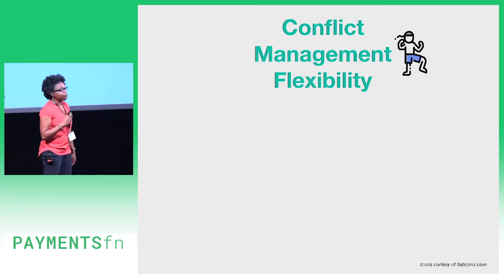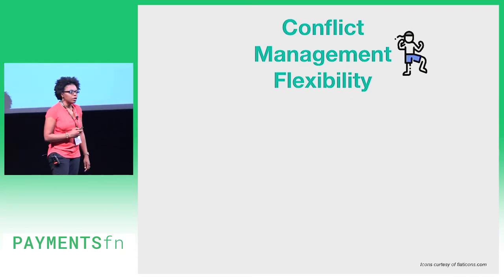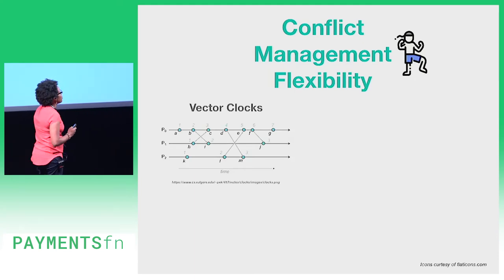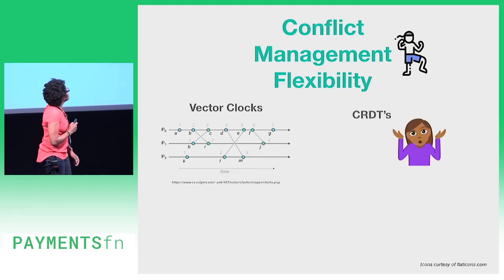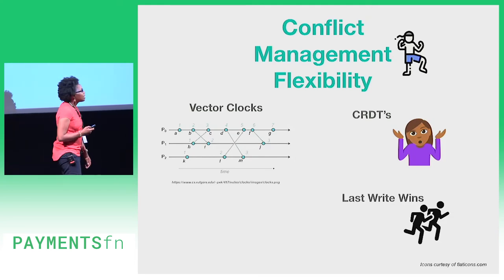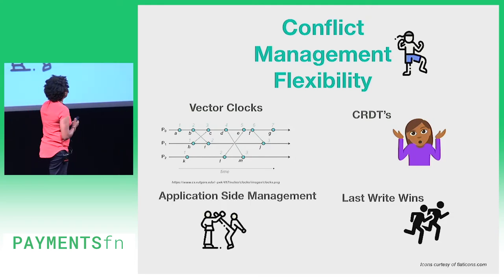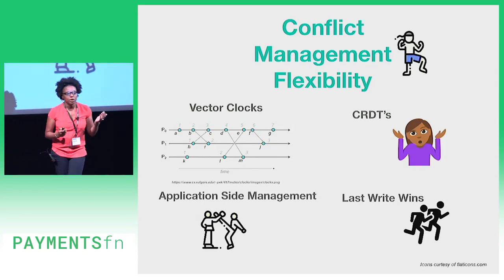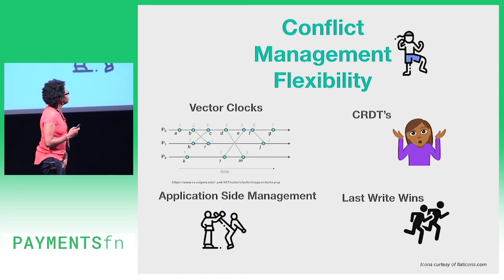There's also a lot of flexibility in how we handle conflicts. By default there are vector clocks. We also have CRDTs, but who really knows what those are anyway. There's also last-write-wins if you want to use timestamps. But at the end of the day, you can also do application-side management, so you can decide exactly how to handle each conflict as it comes up.